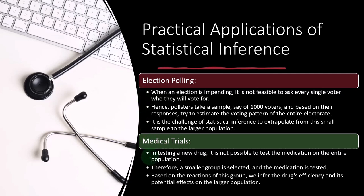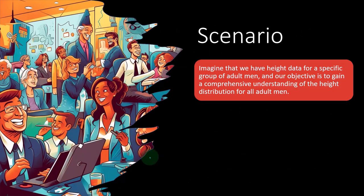Let's take a look at a scenario. Imagine that we have height data for a specific group of adult men, and our objective is to gain a comprehensive understanding of the height distribution for all adult men. Height is a good one to test out when you're first looking at this kind of inference analysis, because heights will normally come to somewhat of a bell-shaped distribution. Most people, when you look at the height of men, tend toward a middle point.